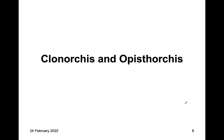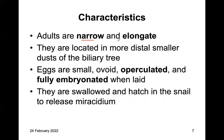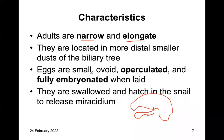We'll start with Clonorchis and Opisthorchis. These two adults are narrow and elongate and located in the more distal, smaller ducts in the biliary tree. Eggs are usually small, ovoid, and operculated, and they are fully embryonated when laid. They are swallowed and hatch inside the snail to release the miracidium.